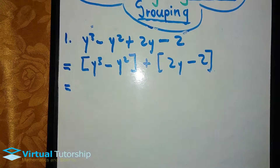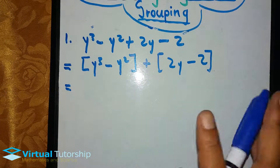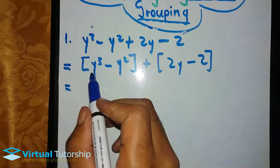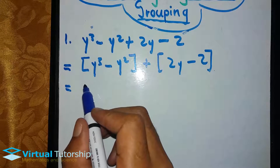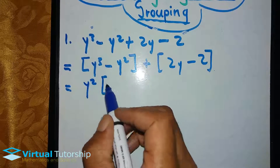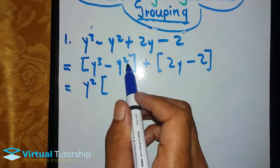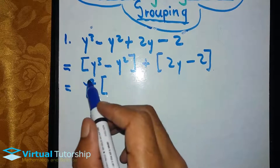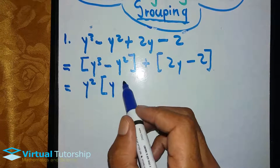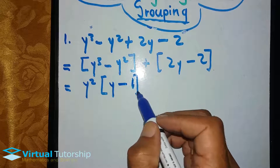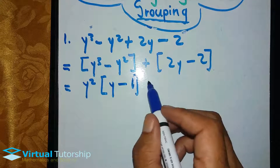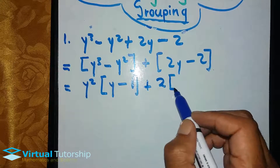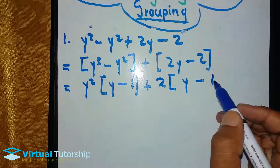So, equal to. When you group in pairs, usually you need to take out a common factor. In this case, y squared is the common factor of y cubed minus y squared. So, you keep y with the lowest exponent and what remains is y minus 1. Then you take 2 as the common factor of the second pair, which leaves y minus 1.